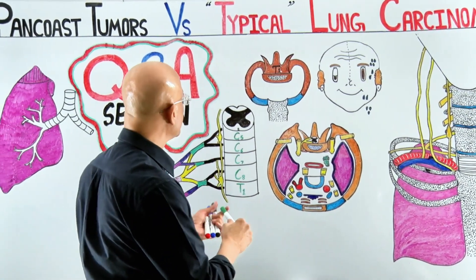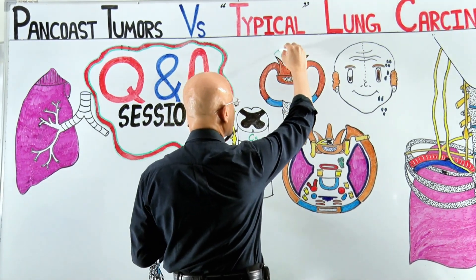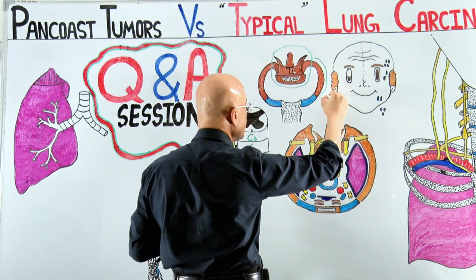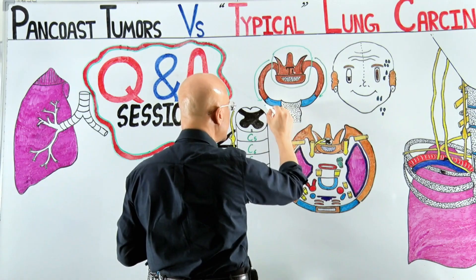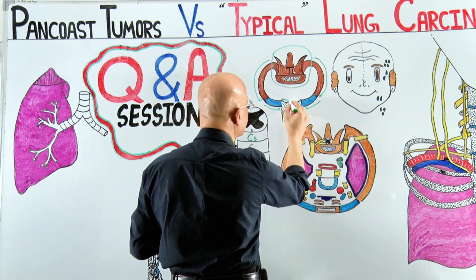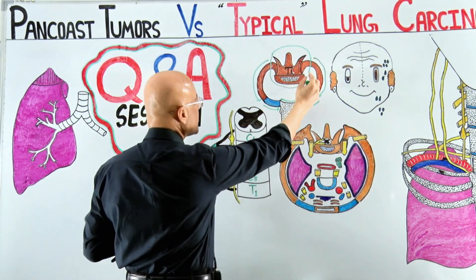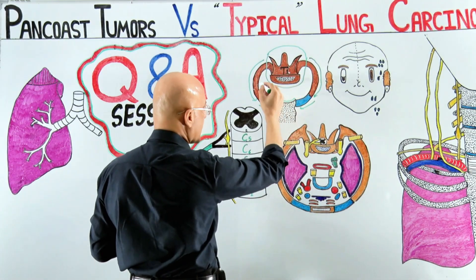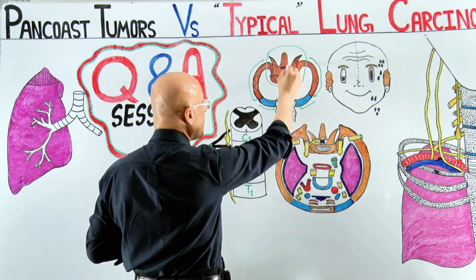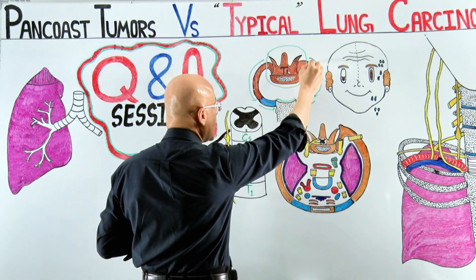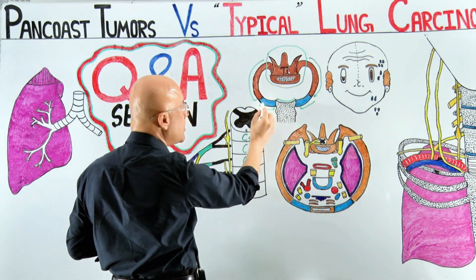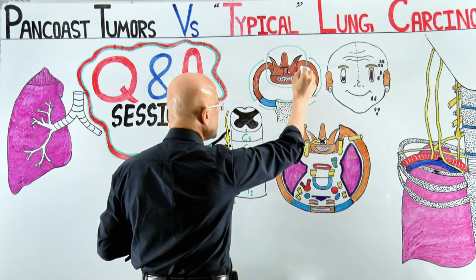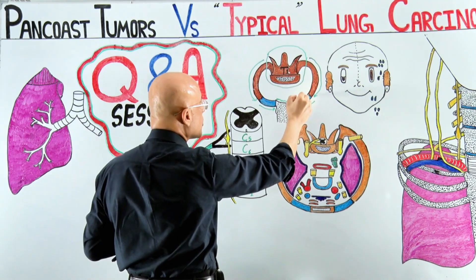The thoracic inlet consists, from posteriorly to anteriorly: number one, the T1 vertebra; number two, the bony part of the first rib; then the cartilaginous part of the first rib; then the uppermost border of the manubrium. This structure is a kidney-shaped aperture, posteriorly bounded by the body of T1 vertebra, on the sides by the bony and cartilaginous parts of the first rib, and anteriorly by the upper margin of the manubrium. This is called the superior thoracic aperture, also called the thoracic inlet.